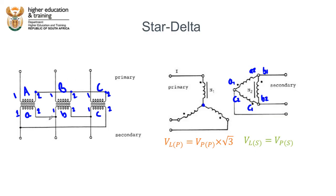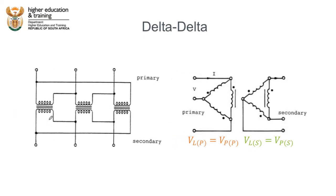We can also connect this three-phase transformer as a delta-delta connection. In this case, both the primary and the secondary side are connected in a delta configuration. The line voltage on the primary side equals the phase voltage on the primary side, as for any delta connection, and on the secondary side the line voltage also equals the phase voltage.